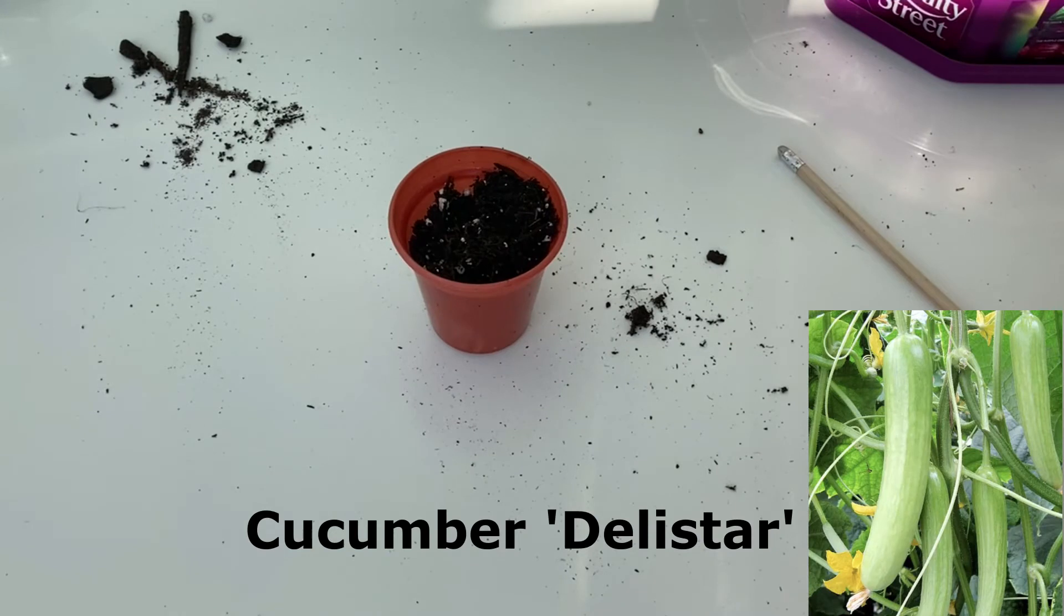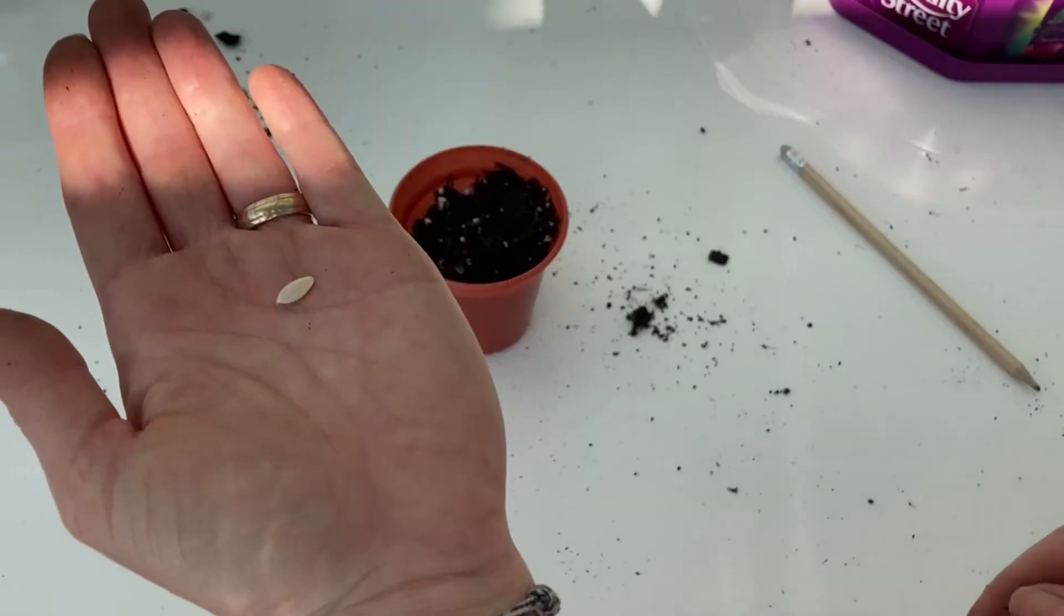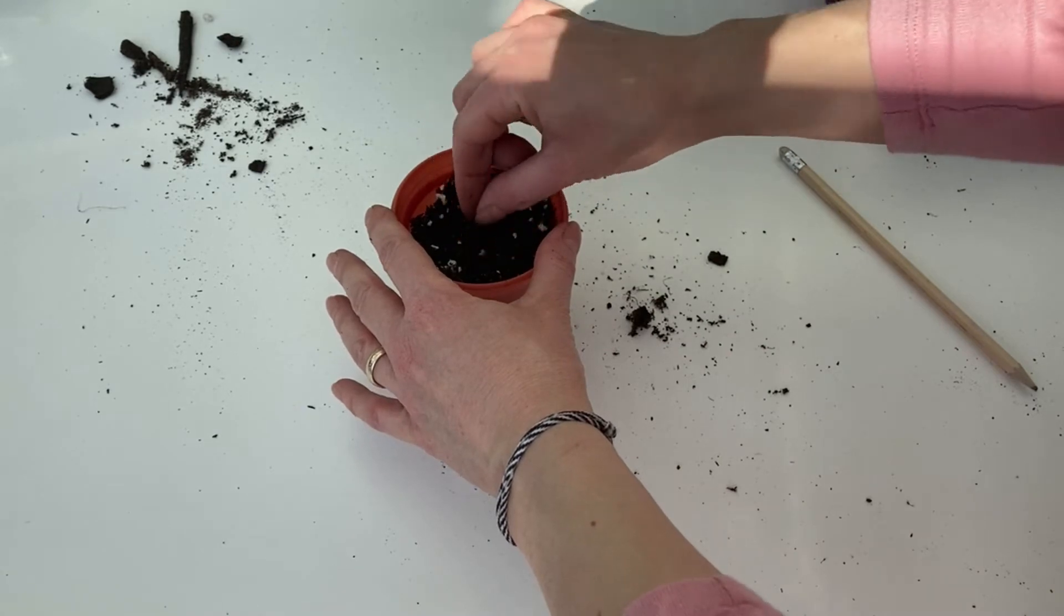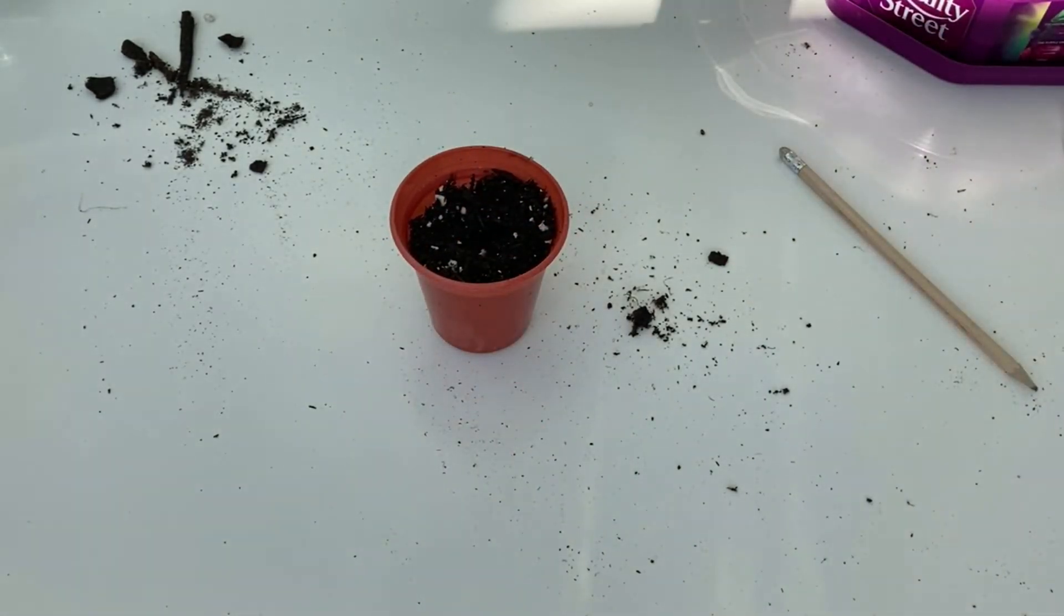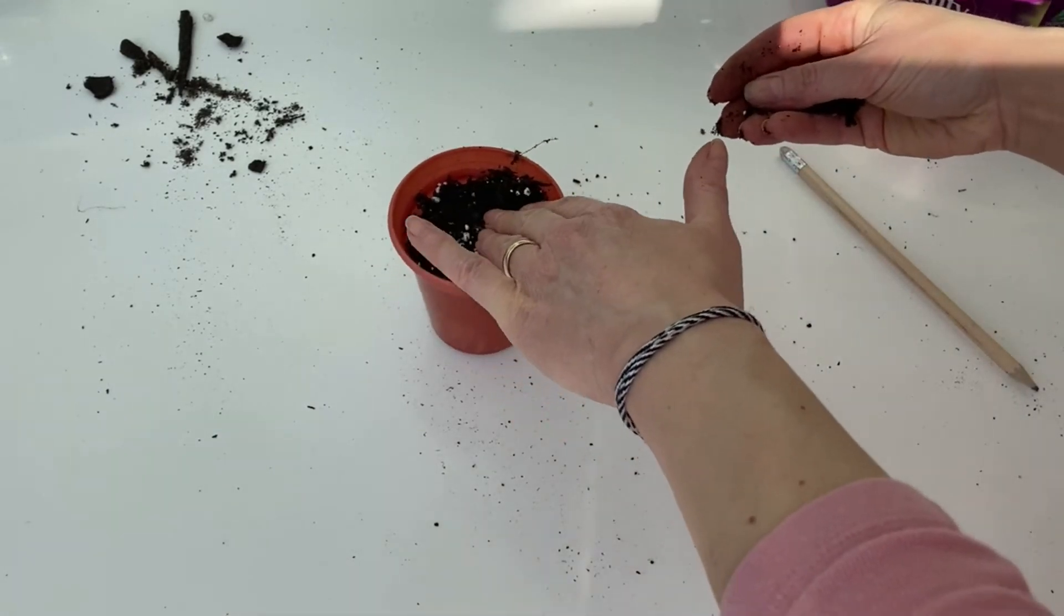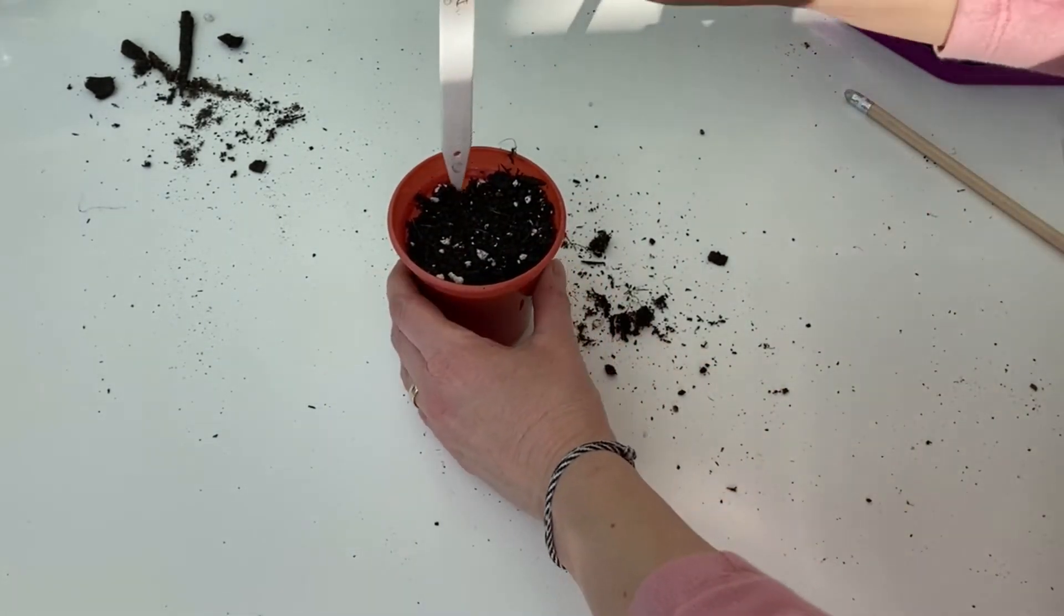The third and final cucumber I'll be sowing is Deli Star, and I particularly like this variety because it has smooth skin and is actually really tasty. Again, just sow one seed per pot about a centimeter down. Germination will take six to nine days, and you can plant out in the garden in June or April-May in a greenhouse.